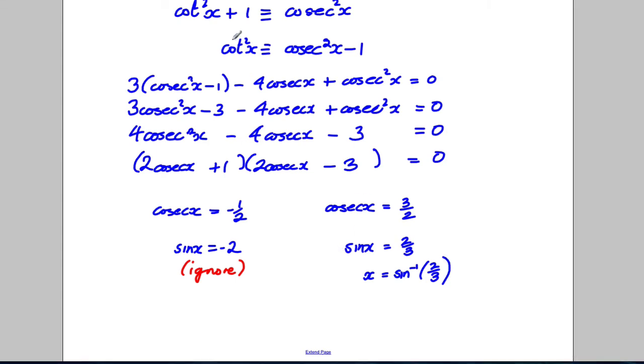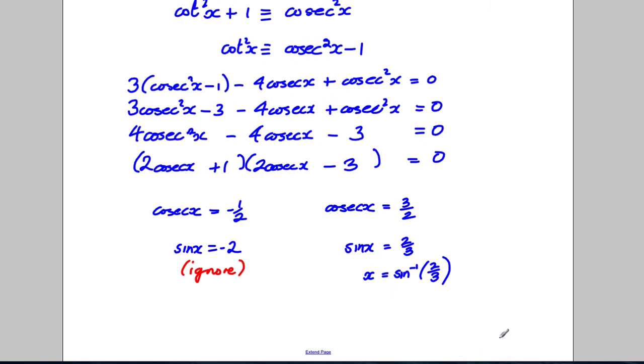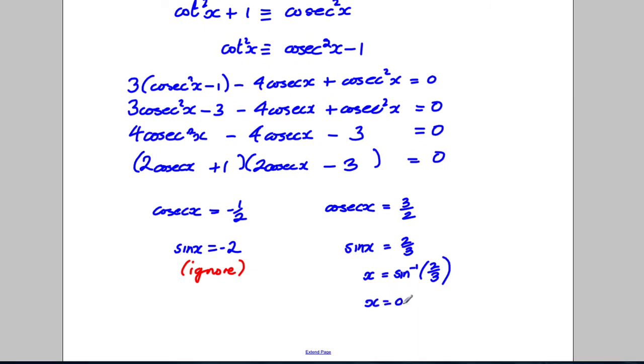Actually, how did it ask for it? It asked for it to two decimal places. So, it would be 0.73. So, x is equal to 0.73.